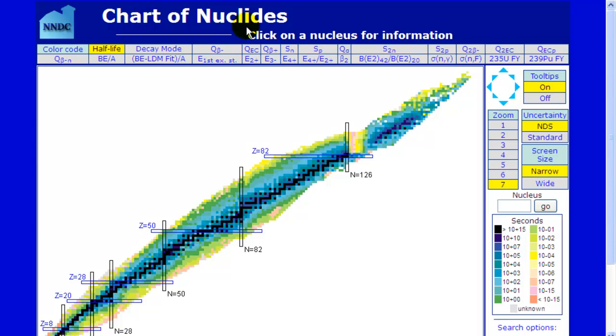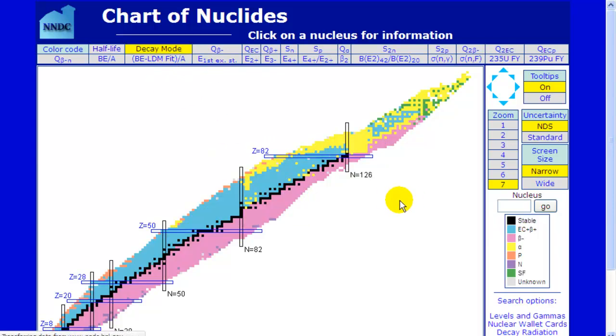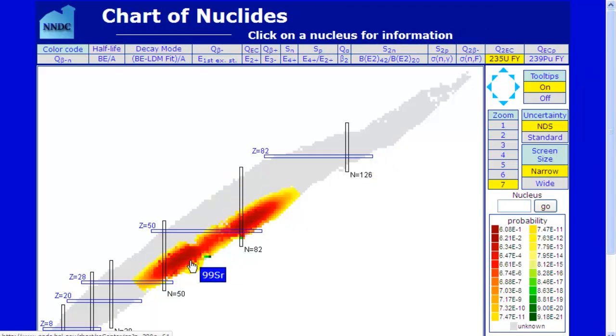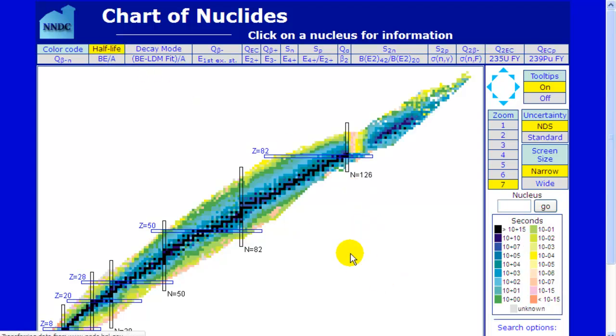You'll also understand what this chart of nuclides is all about. We're going to take a tour of this and show the half-life perspective and the decay mode perspective and look at the fission products of uranium. All of that should be a little bit crazy sounding right now, but we're going to have a few videos to explain what all this is about.